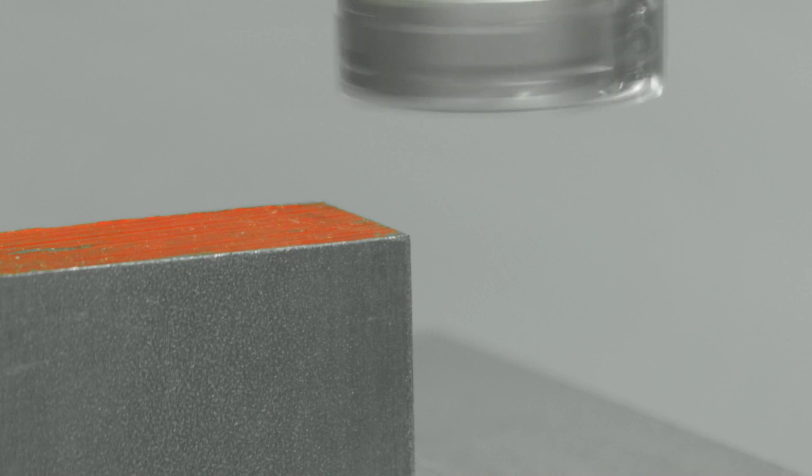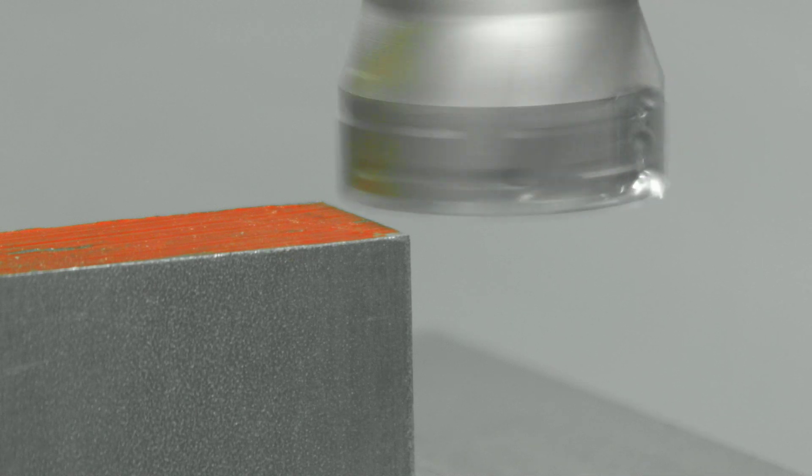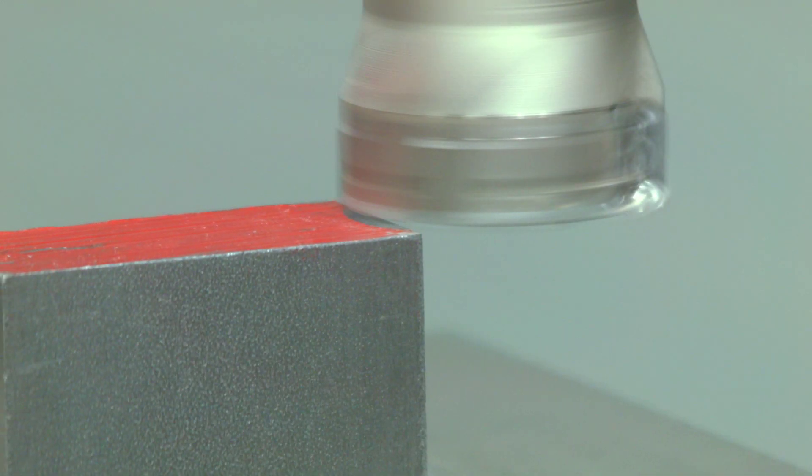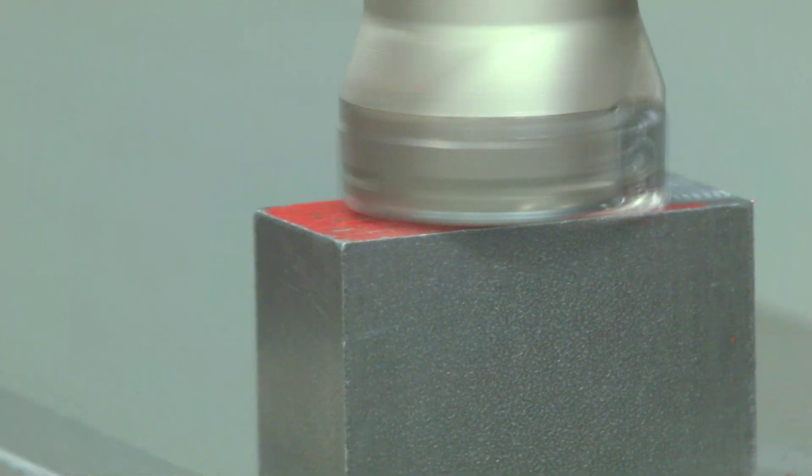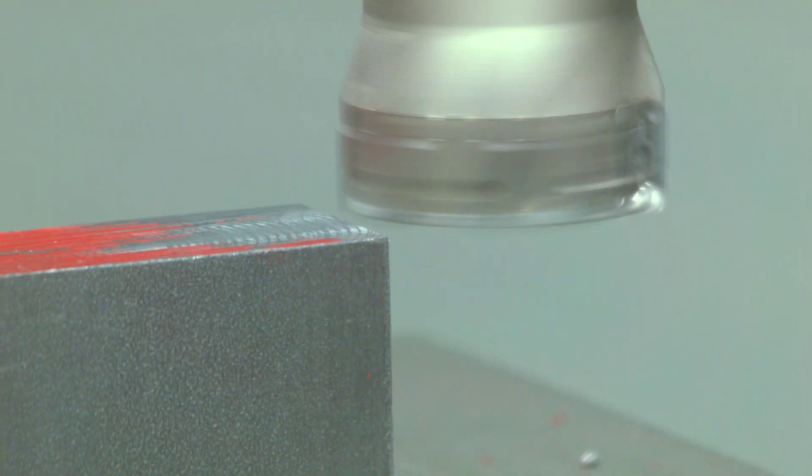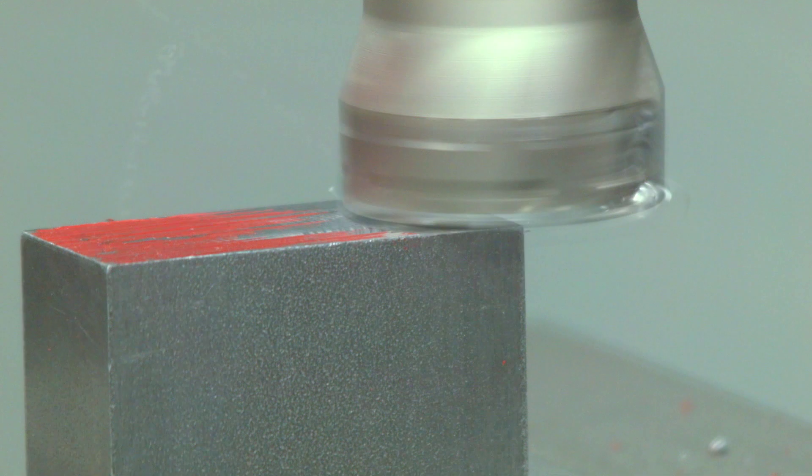We touch off the cutter and this time it's very important to keep track of how much material we remove. We are trying to get this dimension to be as close to 3 inches as we can. I'll leave about 5 thousandths for finishing.